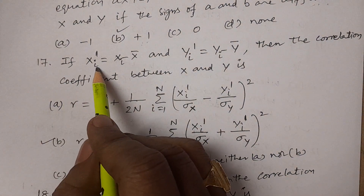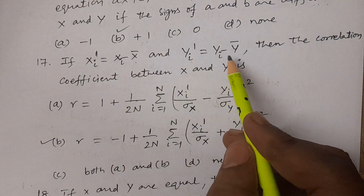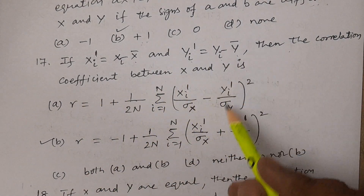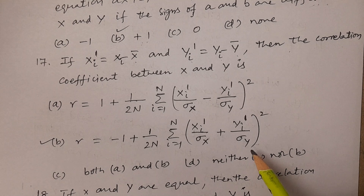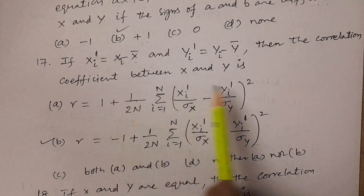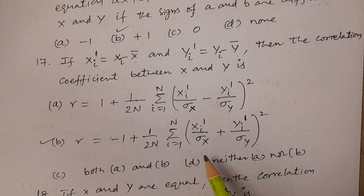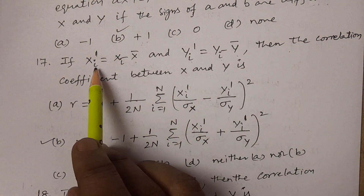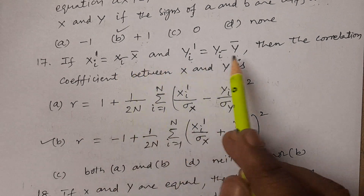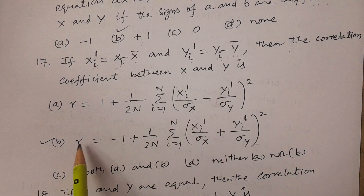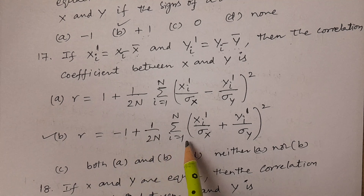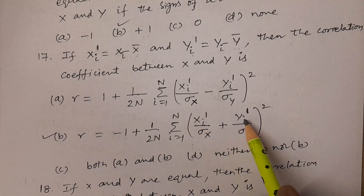Question number seventeen: if xi dash equals xi minus x bar and yi dash equals yi minus y bar, then the correlation coefficient between x and y. This is a standard result: r equals minus one plus one by two n times summation from i equals one to n of xi dash by sigma x plus yi dash by sigma y, whole squared.